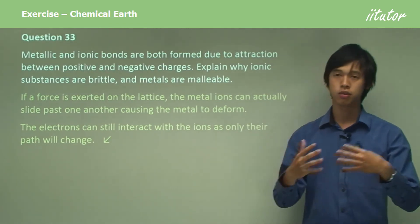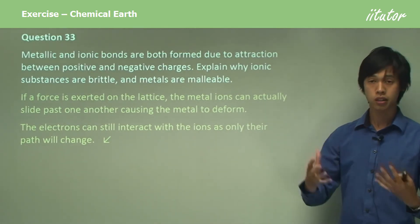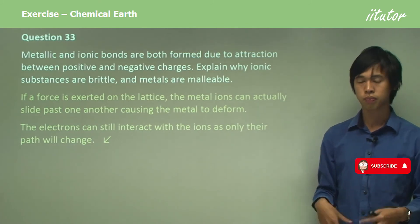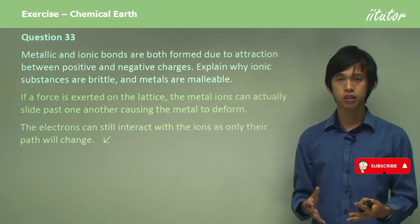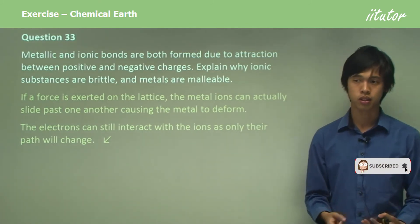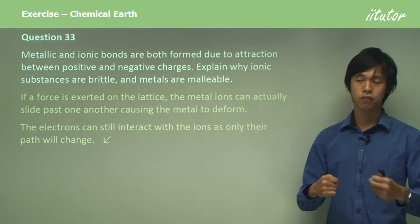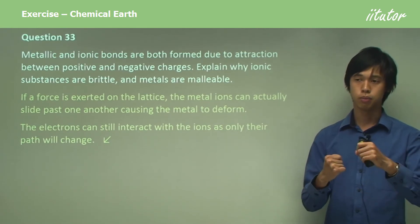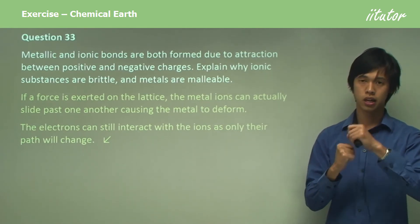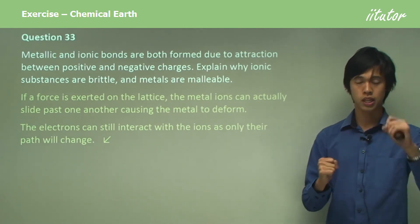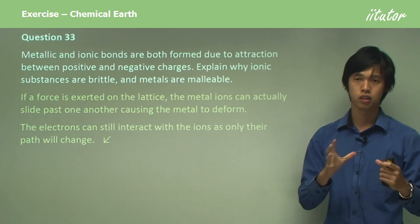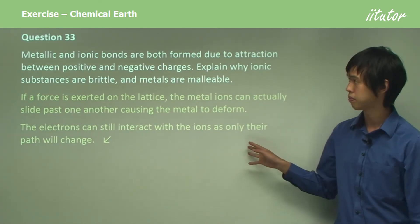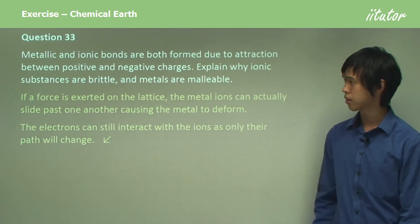Which is why metals can bend and be reformed, while ionic substances are generally brittle. Because there are so many forces holding them together, and so many ions holding each part together, that it just doesn't want to be deformed in any way.